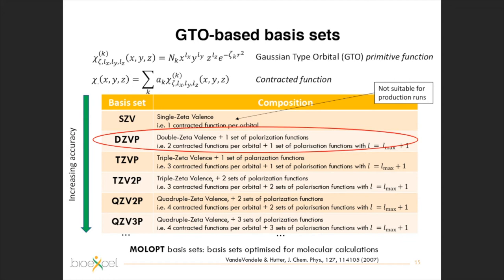Another question from Vinay: 'Can you please explain the differences between D3 dispersion and many-body dispersion, transition state correction, and does CP2K have many-body dispersion correction as well?' Regarding many-body dispersion and 'transition state correction' — I'm not sure what you are referring to with that term, but I can tell you something regarding the difference between DFT-D2 and DFT-D3 dispersion corrections that were introduced in the lecture.